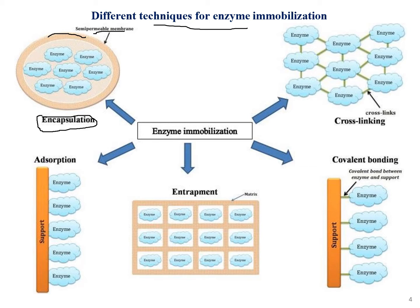Adsorption takes place through a support — enzymes get attached or stuck to the support surface. Entrapment is similar to encapsulation in that enzymes are trapped inside, but here inside a matrix or membrane structure rather than a simple capsule.